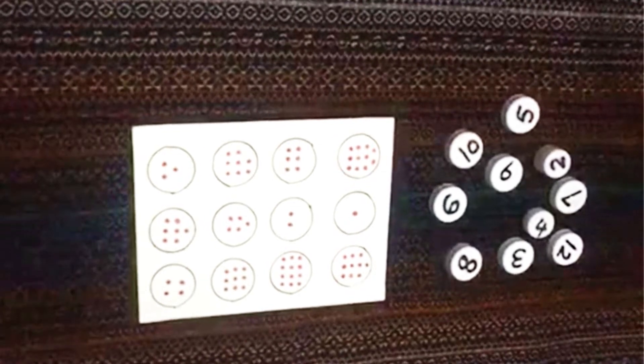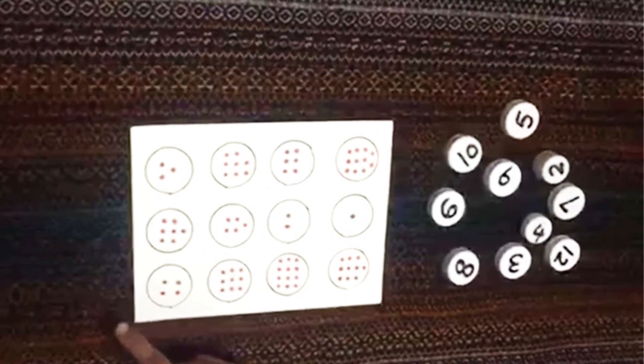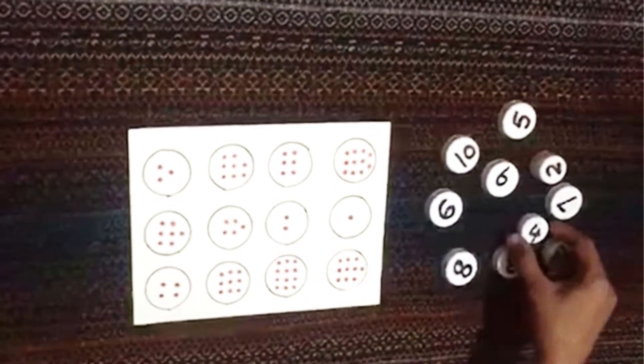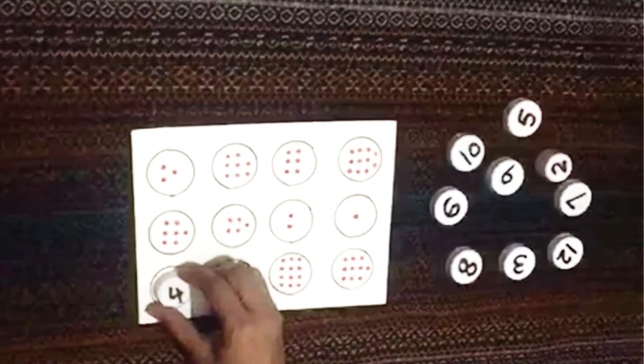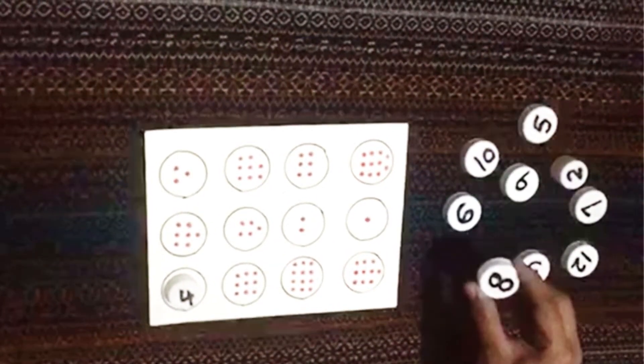For suppose, one, two, three, four, and then let him search the correct number and put it on the right place. Like this, eight. One, two, three, four, five, six, seven, eight.